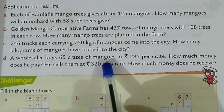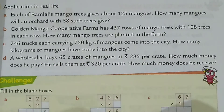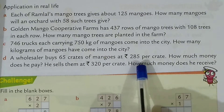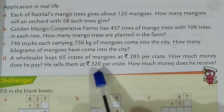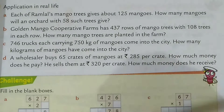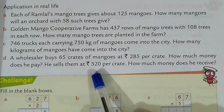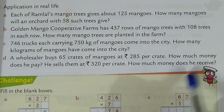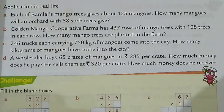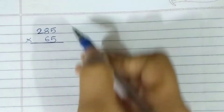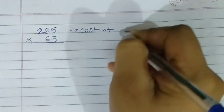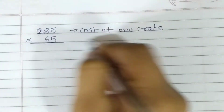Question D: A wholesaler buys 65 crates of mangoes at rupees 285 per crate. How much money does he pay? The cost of one crate is 285 rupees, and the number of crates is 65. Now multiply this.